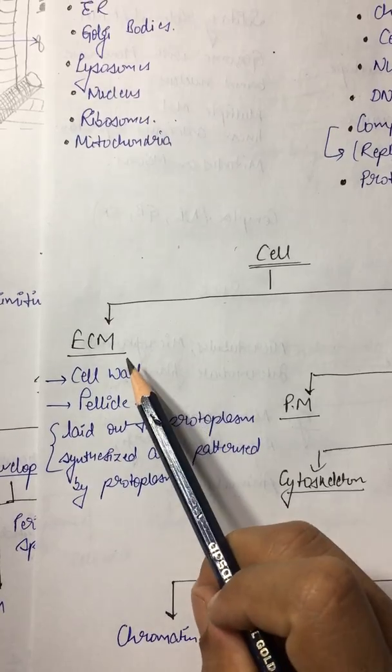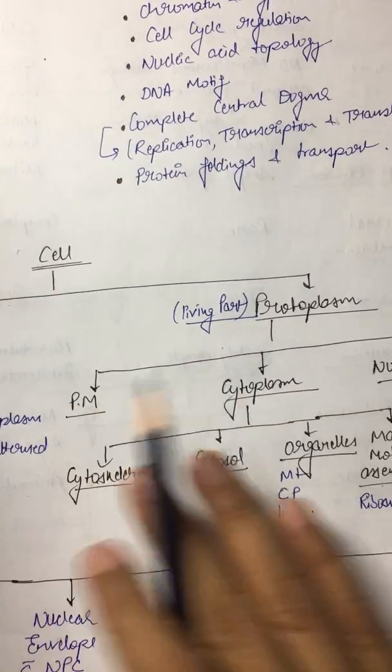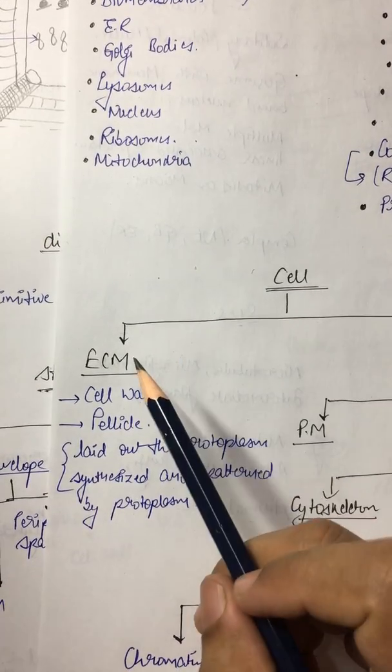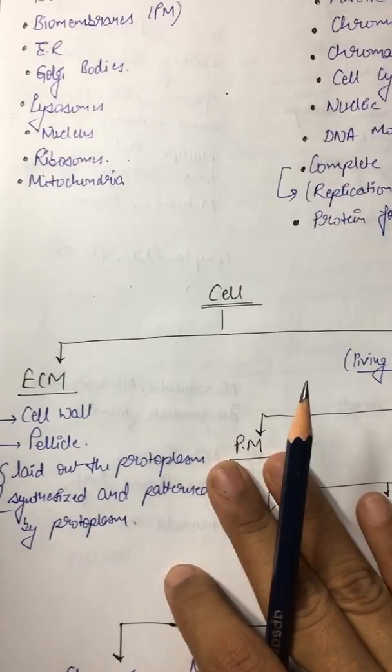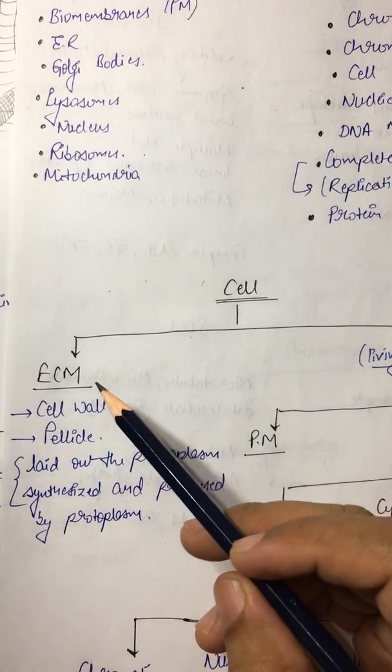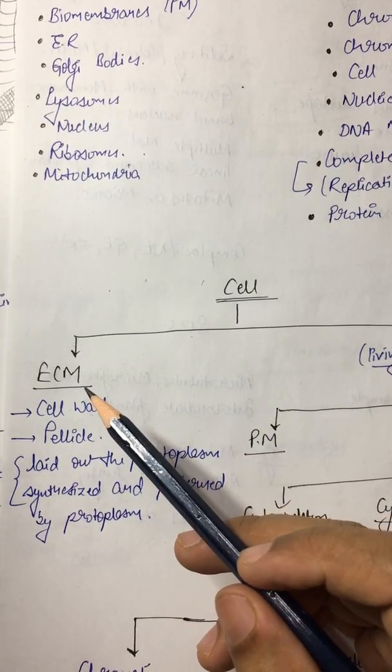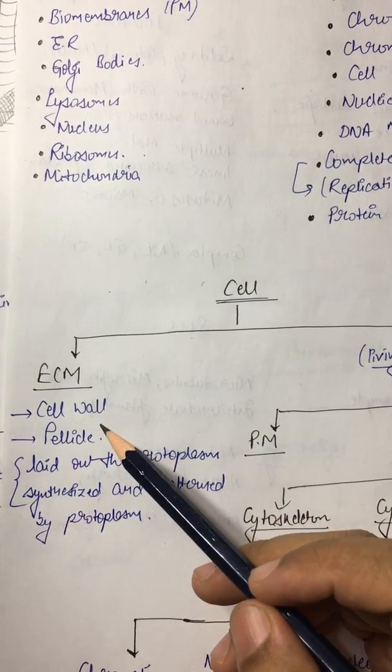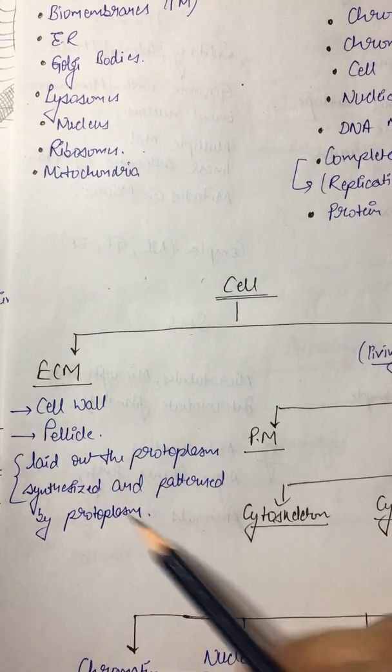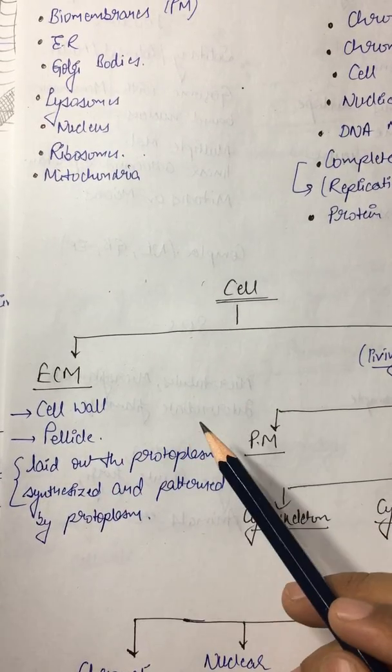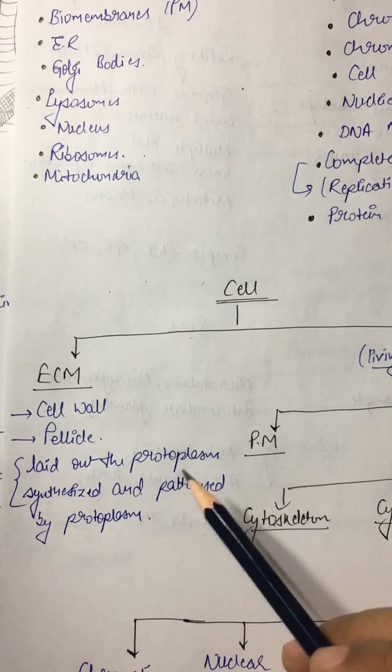of extracellular membrane and protoplasm. Anything which is outside the protoplasm is known as extracellular membrane. It comprises of cell wall and pellicle. Anything laid outside protoplasm is synthesized and patterned by protoplasm. It is mainly to provide structure to the cell.